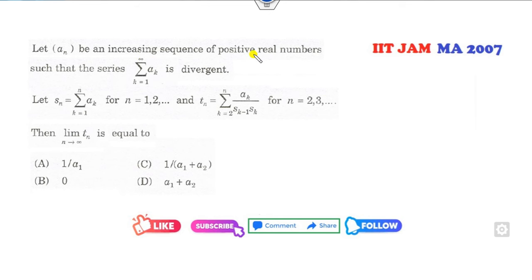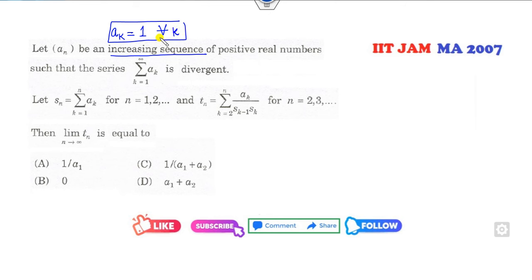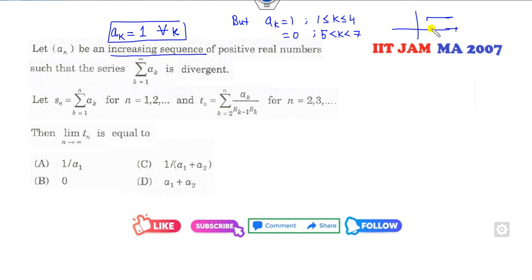Based on these two shortcut tricks, I can solve this PY question. Let a_n be an increasing sequence of positive real numbers. You can choose any increasing sequence — let's say a_k = 1 for all k. This is an increasing sequence. Remember, every constant sequence is increasing. If you choose a_k = 1, then this series is a constant series, but it is non-zero, so it is divergent.